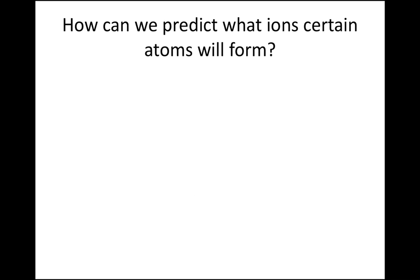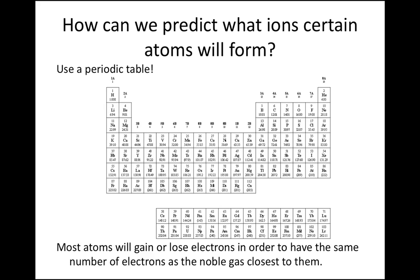But for single atoms, we can generally predict what sort of ions they will form. We can predict what ions certain atoms will form by using a periodic table. In general, most atoms will gain or lose electrons in order to have the same number of electrons as the noble gas closest to them.